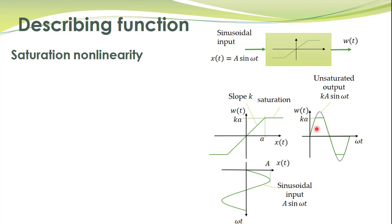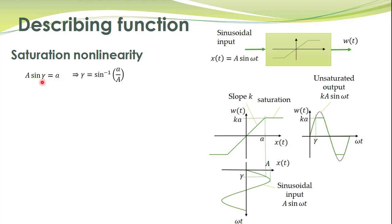What is this time instant? Let's call this time instant ωt equal to γ. In this graph, γ is the time instant when the amplitude of the sinusoid equals the value a. We can find γ: at this time instant, A sin(γ) is equal to small a. Capital A into sin(γ) equals small a. And we can find γ from here: γ is equal to sin⁻¹(a/A), by simply rearranging these terms.